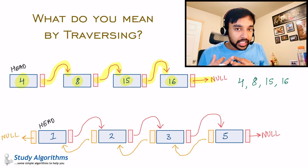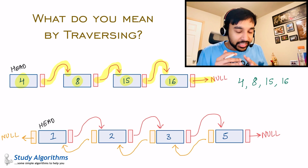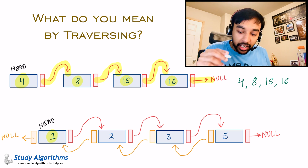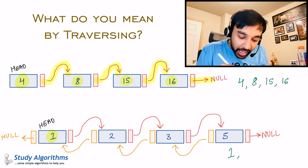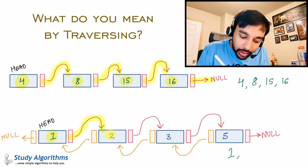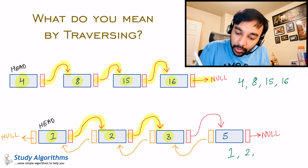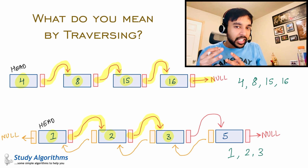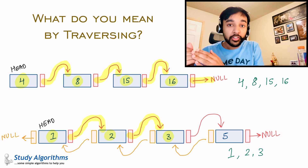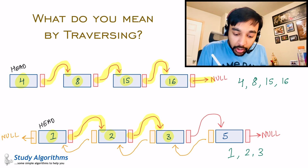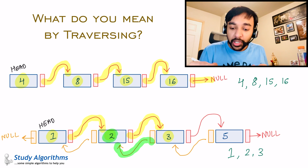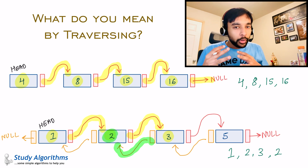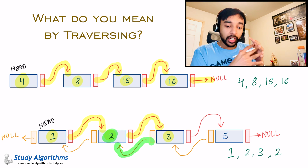Similarly, let us take a doubly linked list. If you want to traverse this list, you start from the head and see 1. You can go in the next direction, take the next pointer and reach value 2, then next again to reach value 3. So you have 1, 2, 3 on the screen. Since it is a doubly linked list, you can traverse in both directions. You may want to go back — you do a previous pointer and reach your previous value 2 again. So what we are doing here is traversing the data structure, going through all the values.